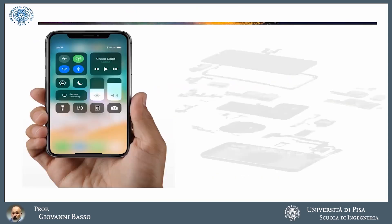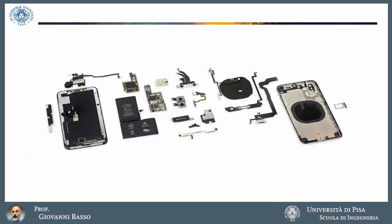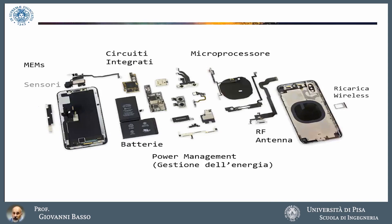Take, for example, a cell phone. If we open it up, we find a large number of devices that are electronic or that work better thanks to electronics. We find a microprocessor that is the heart — or perhaps the brain — of the cell phone, because it coordinates the correct functioning of all the components. We find other integrated circuits with different applications. We find sensors through which the cell phone acquires information on the surrounding environment, allowing us, for example, to put an image in focus when we use the camera, or to acquire information on the temperature or luminosity of the environment in which the cell phone is located. We have a system of energy management — an electronic system based on electronic circuits that allows us to know, for example, when the batteries of our cell phone are almost depleted and need to be recharged.